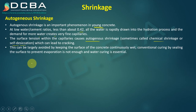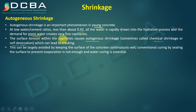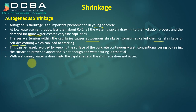Autogenous shrinkage can be largely avoided by keeping the surface of the concrete continuously wet. Conventional curing by sealing the surface to prevent evaporation is not enough — water curing is essential. Even covering concrete with plastic sheeting won't be sufficient; you must provide water externally so the demand for more water is fulfilled. The capillaries then won't cause shrinkage due to surface tension. With wet curing, water is drawn into the capillaries and the shrinkage does not occur.